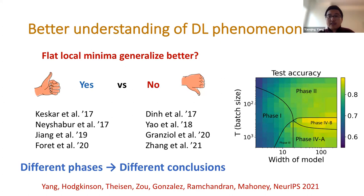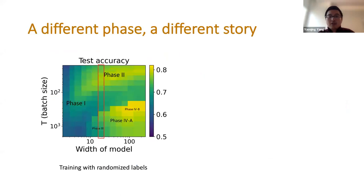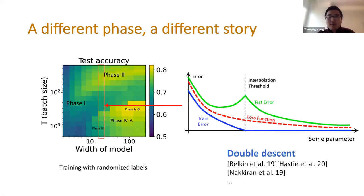In addition to hyperparameter tuning, you can use phase plots to achieve better understanding of deep learning problems. Many prior works have the flat-versus-sharp local minimum debate. In this talk I'll show that whether a flat or sharp local minimum is better depends on the phase of the problem.